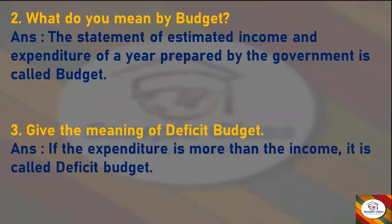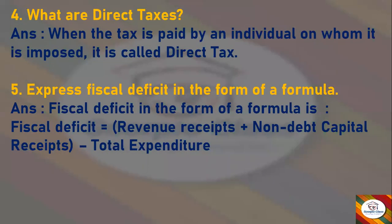Next: give the meaning of deficit budget. Answer: if the expenditure is more than the income, it is called deficit budget. Next: what are direct taxes? Answer: when the tax is paid by an individual on whom it is imposed, it is called direct tax. Next: express fiscal deficit in the form of a formula. Answer: fiscal deficit equals revenue receipts plus non-debt capital receipts minus total expenditure.